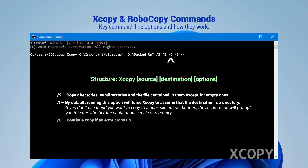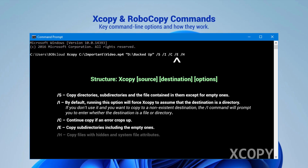/C: Continue copying if an error crops up. /E: Copy subdirectories, including the empty ones. /H: Copy files with hidden and system file attributes.